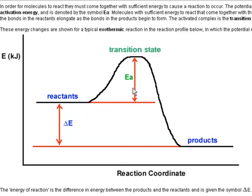Here's the activation energy needed for this reaction to occur — the minimum amount of energy needed. Say the value is 100 kilojoules per mole. For this particular reaction, you need 100 kilojoules per mole. If you don't give it at least 100 kilojoules per mole, then nothing's going to happen. You can give it more than 100 kilojoules per mole, but if you don't give it that much, nothing's going to happen.